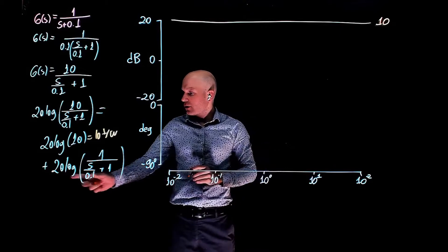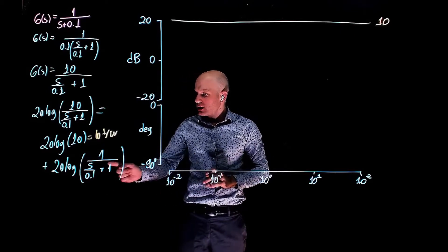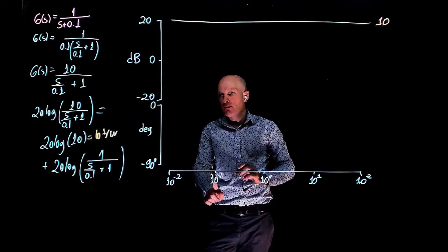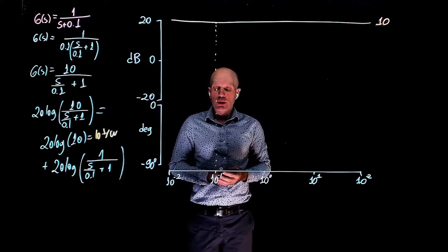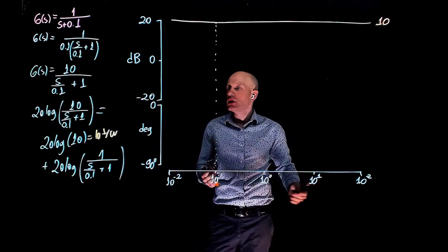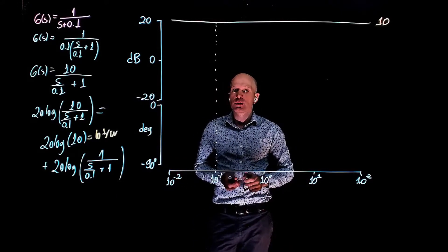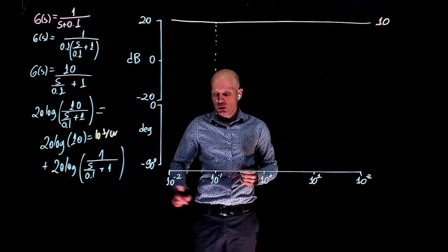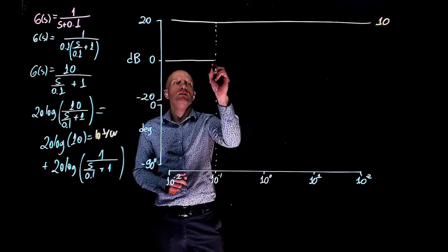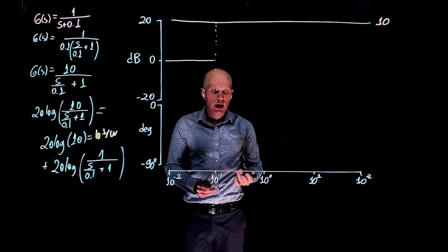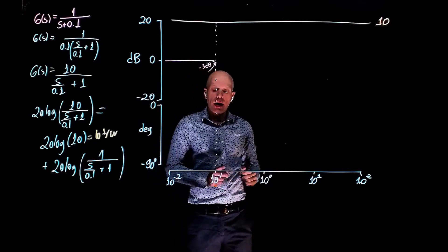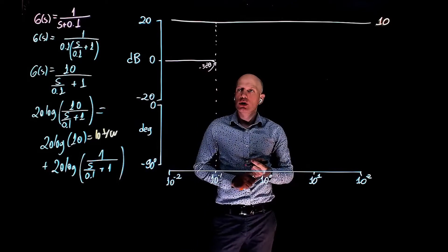The second element we have is 20 log of a real pole. This pole has a cutoff frequency of 0.1 radians per second, that is 10 to the power of negative 1. For a real pole, up to the cutoff frequency the magnitude of the Bode plot is 0, and past the cutoff frequency the Bode plot starts to decay by a factor of 20 decibels per decade. At the cutoff frequency specifically, the gain is negative 3 decibels, so it starts to decay there.